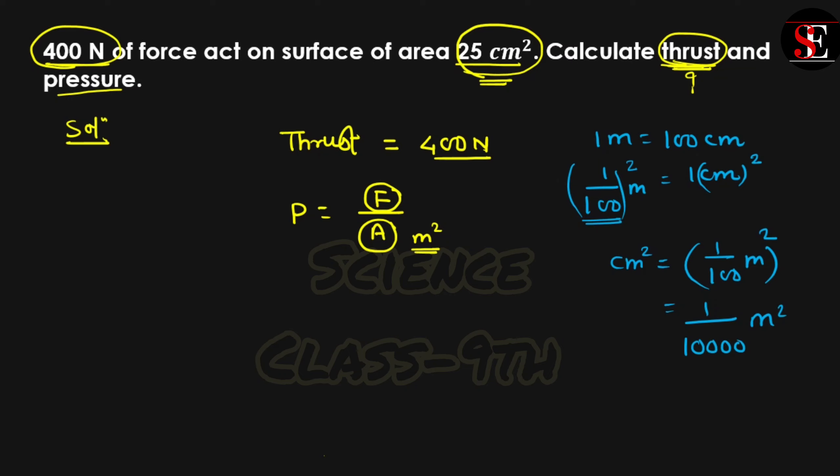Here is 25 cm². The number is 25, there is no change in the number. So you can write 25 by 10,000 m². Now, the pressure formula: force is 400 N below 25 cm².